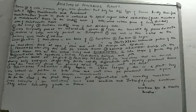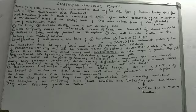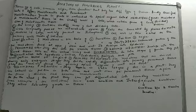Number four: the cells are connected by plasmodesmata. Plasmodesmata are the cytoplasmic connections between two adjacent cells. All cells in a meristematic tissue are connected to each other by plasmodesmata. Number five: the nucleus is large and is mainly present in the interphase stage of cell division.